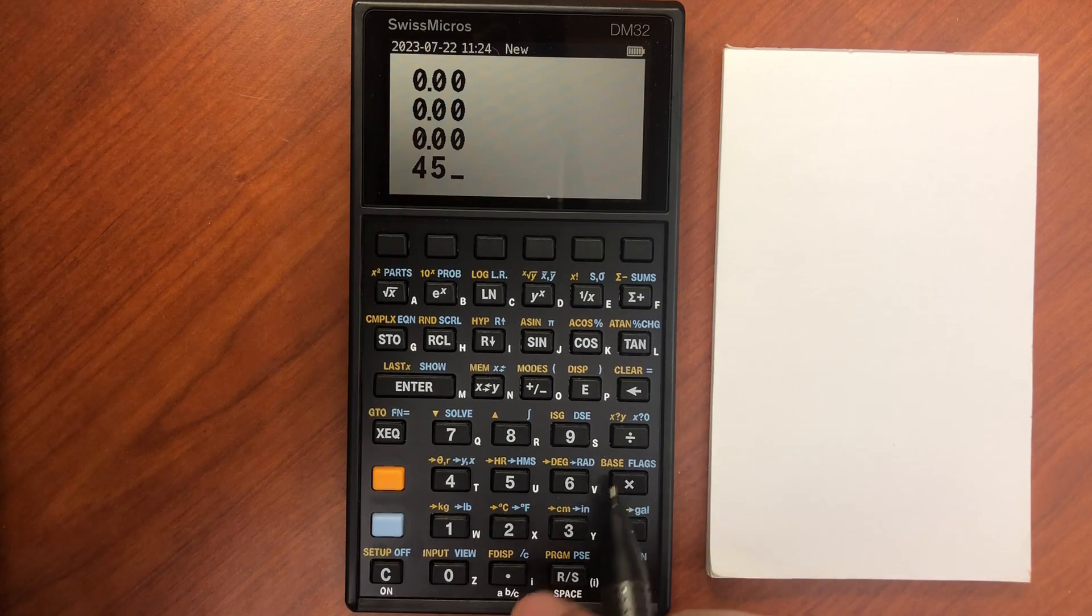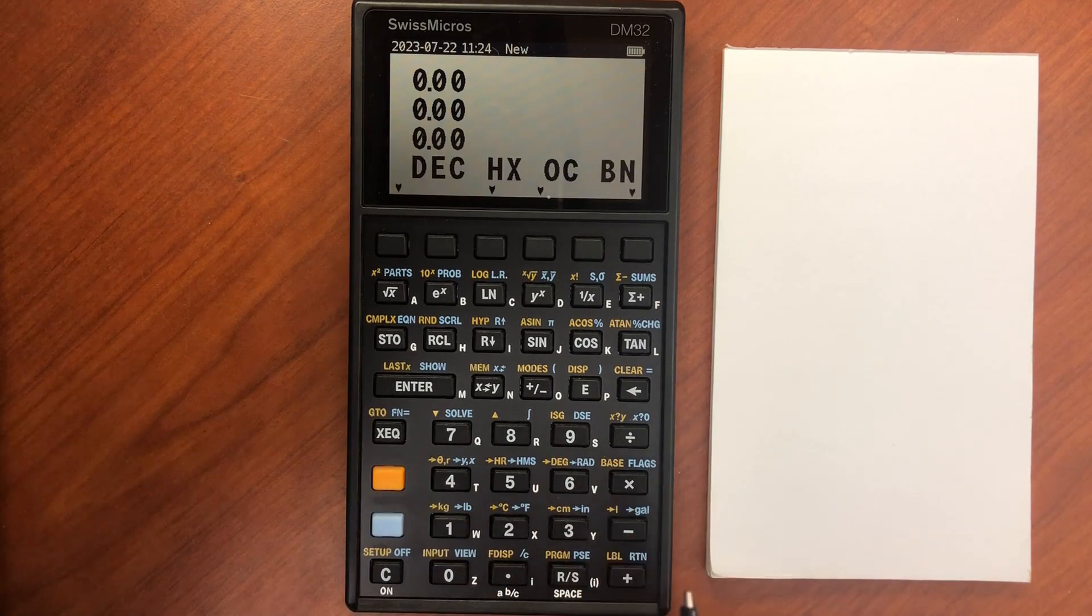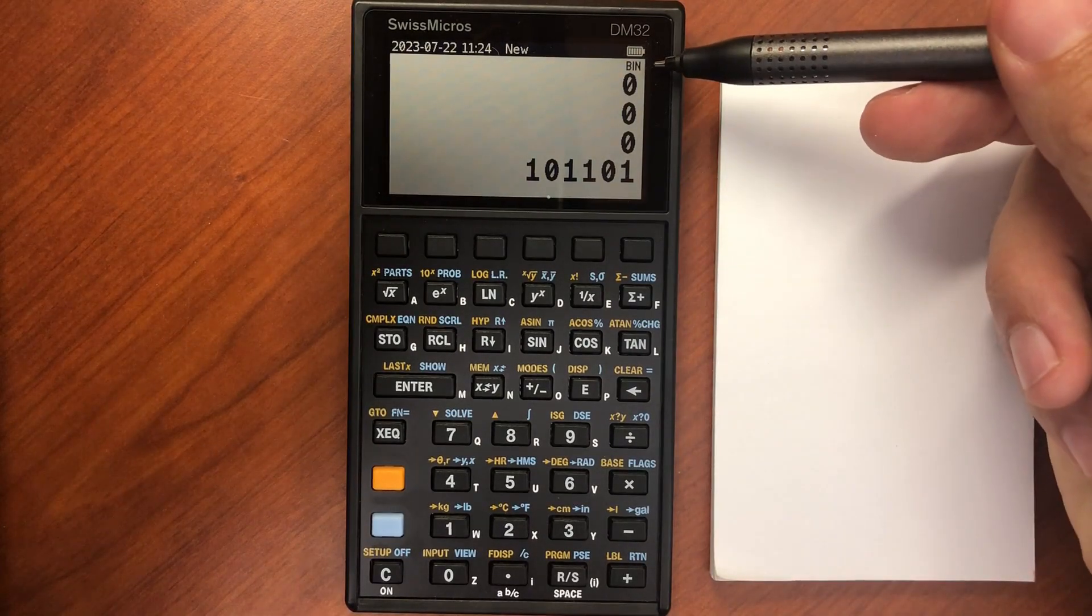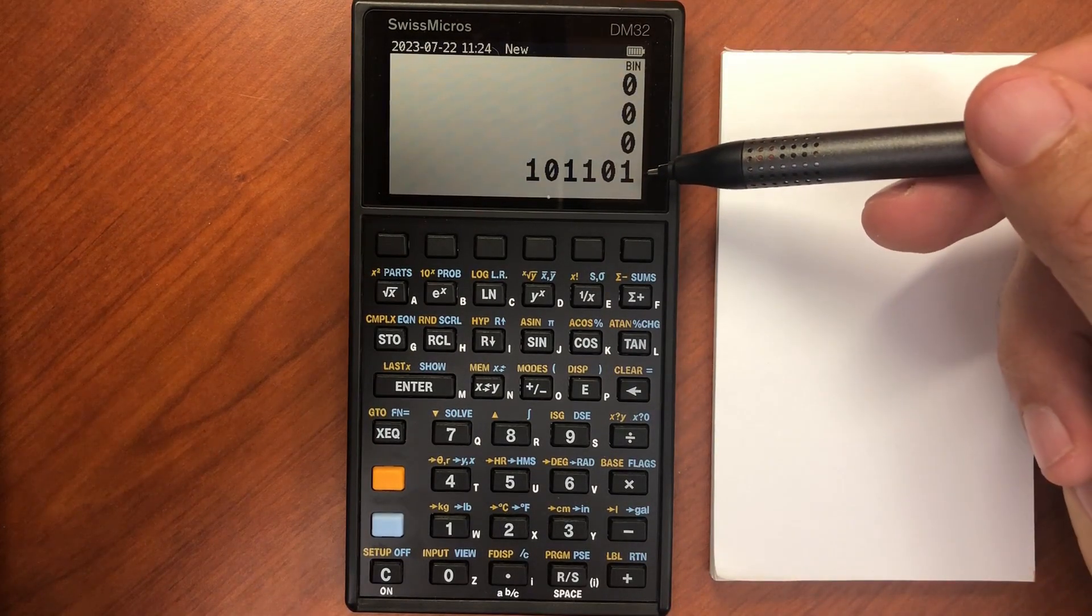I can go to the base menu here, gold shift, base, and then shift to binary. And that gives me binary mode and displays the binary value.